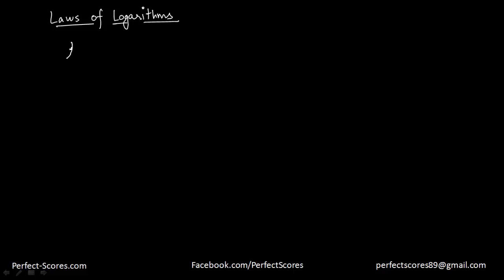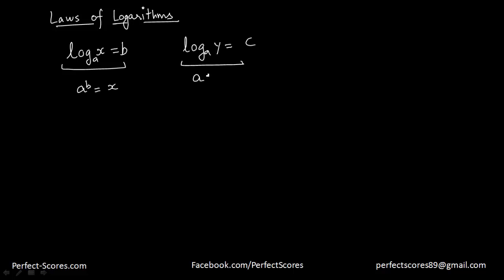Now, let's suppose we have log of x to the base a is equal to b, and we have another function that is log of y to the base a is equal to c. So this is actually going to be transformed to a to the power b is equal to x, and this is going to be transformed to a to the power c is equal to y. Now, if I multiply x and y, that is actually going to be equal to a to the power b times a to the power c, which is actually going to be equal to a to the power b plus c.